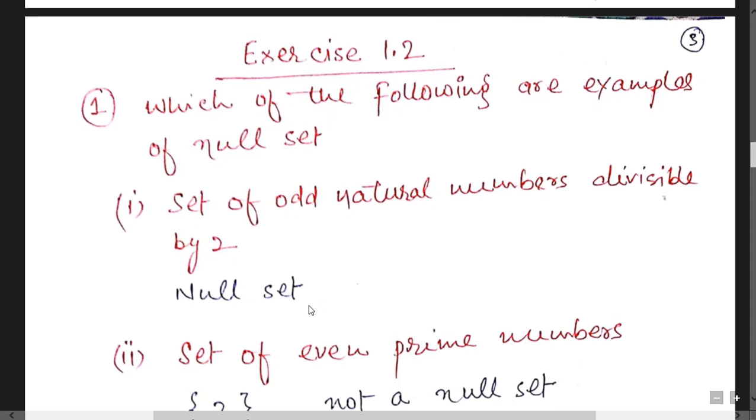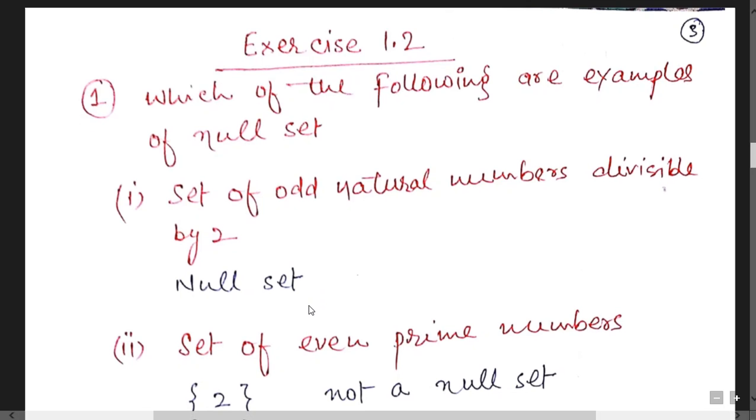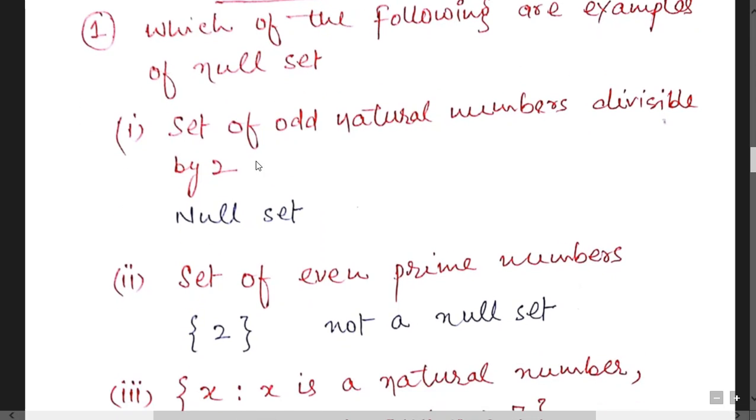Now let us start with the exercise 1.2. Which of the following are examples of a null set? First is set of odd natural numbers divisible by 2. It is a null set because there is no such type of odd number which is divisible by 2.